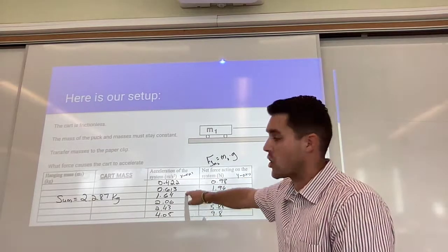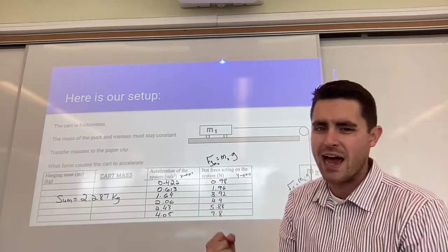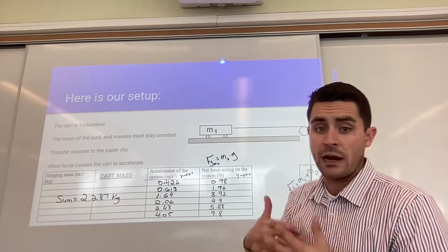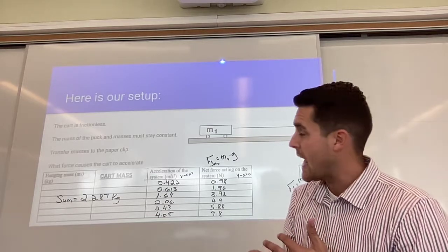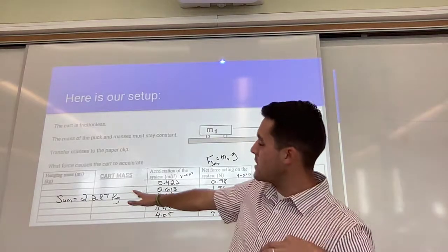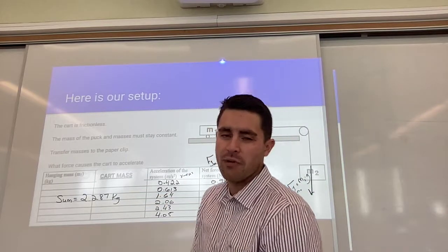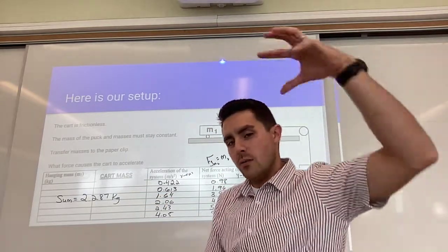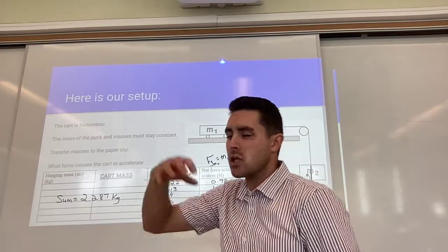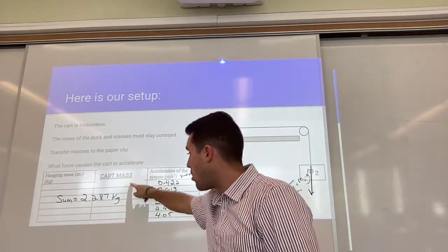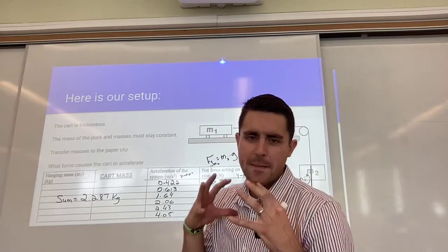Over here, this comes from the cart. These are the accelerations that the cart told my iPad that I had when I was changing the weights hanging from the string. Over here is the sum of my mass. It's the mass of the cart plus the mass sitting on top plus the hanging masses.